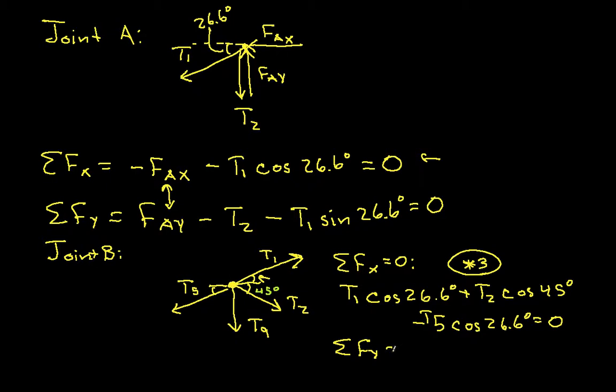The summation FY is equal to 0. So we have T1 sine 26.6 degrees. I'm going to have to make space because this just isn't going to fit the way I've got it started. Okay, so we'll have T1 sine 26.6 degrees minus T2 sine 45 degrees minus T9 minus T5 sine 26.6 degrees is equal to 0. Okay, and we'll call this star 4.